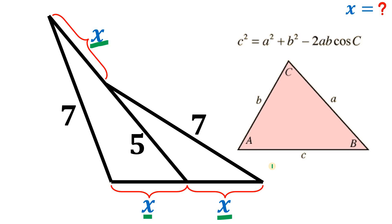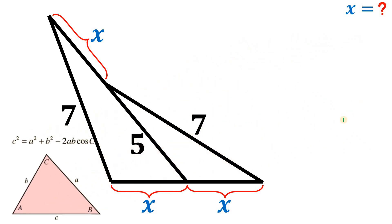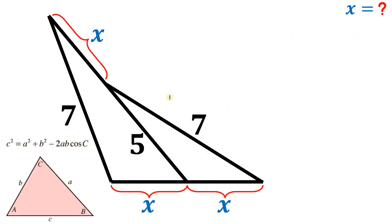The Law of Cosines states that the square of a side of a plane triangle equals the sum of the squares of the remaining sides minus twice the product of those sides and the cosine of the angle between them. In notation: c² = a² + b² − 2ab·cos(C). Using this cosine law, we can now solve for the value of x.